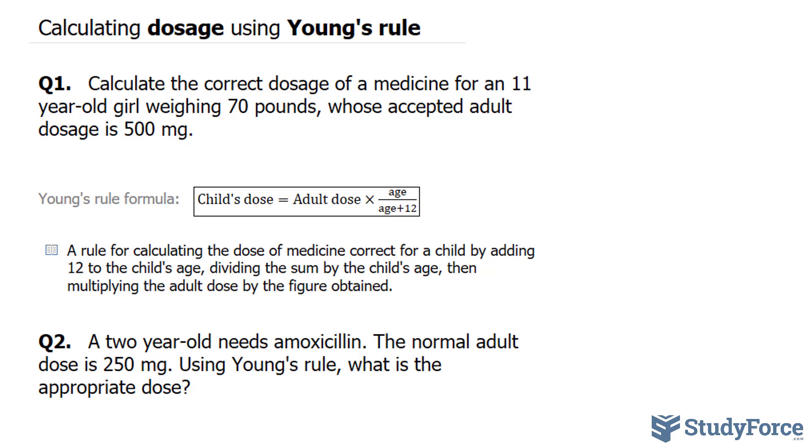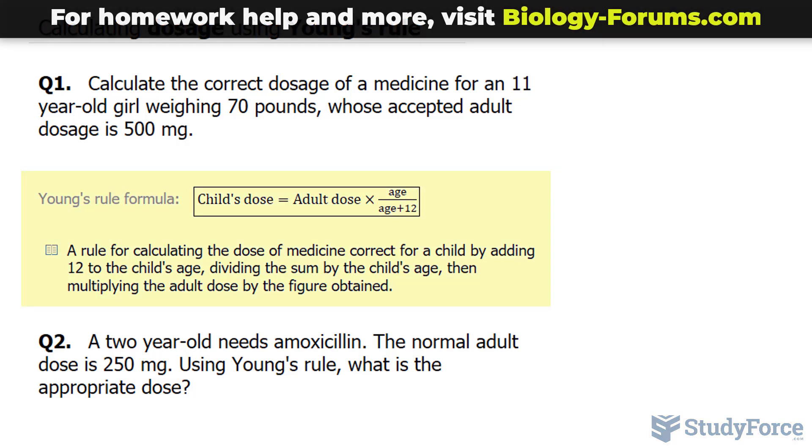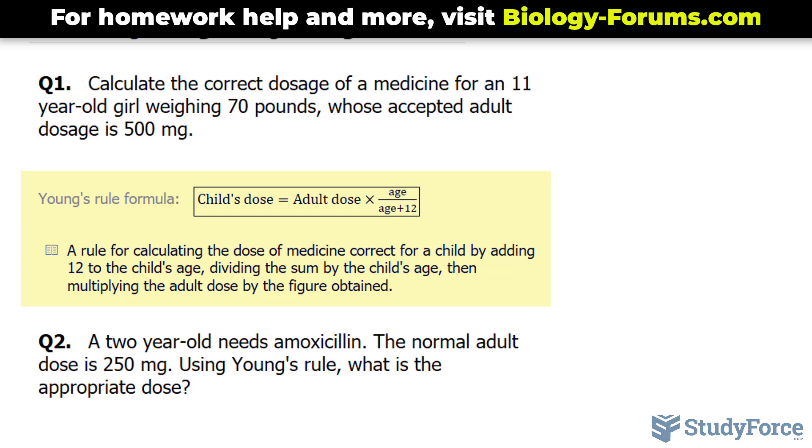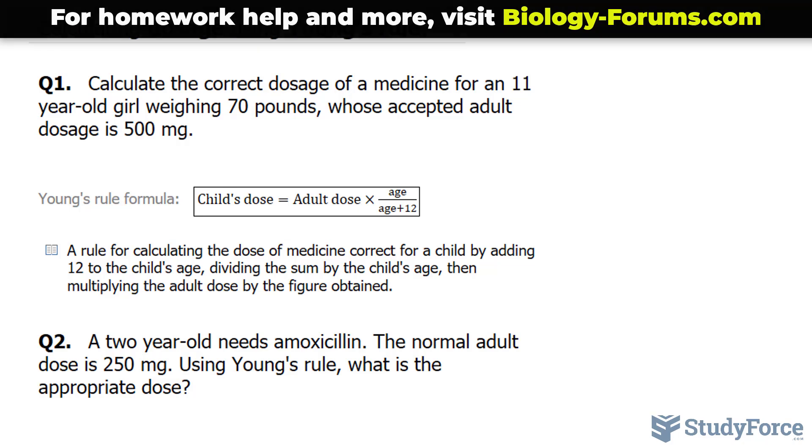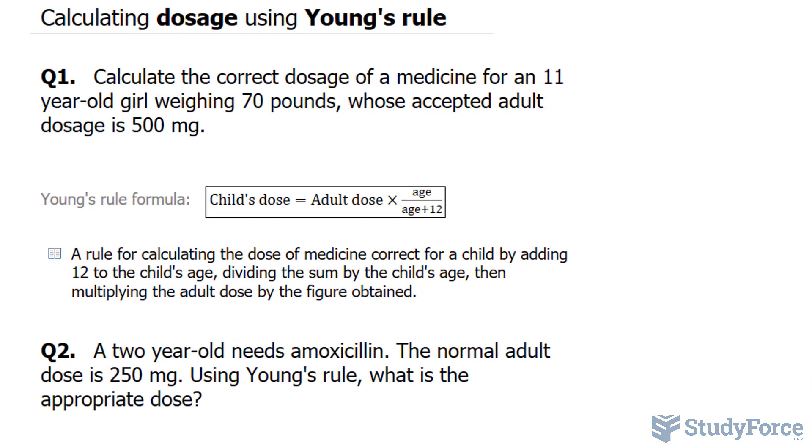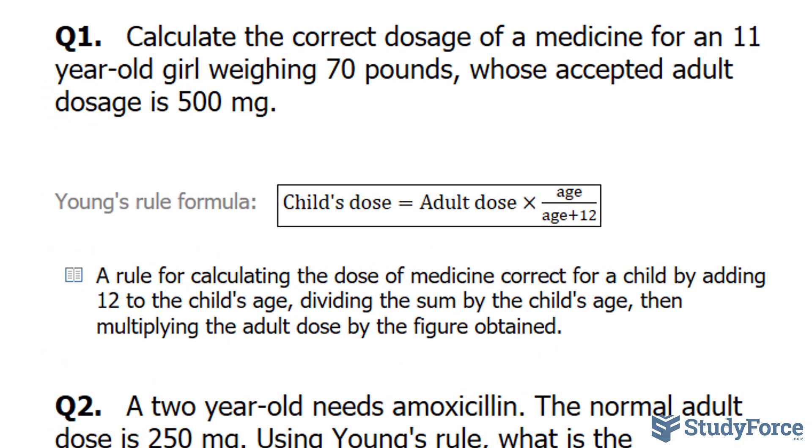Before we begin, let's start with a quick definition. The Young's Rule formula is used to calculate the equivalent dose for children older than 1 year. So this cannot be applied for any infant that's less than 12 months. In addition, the formula works by putting the age in years.